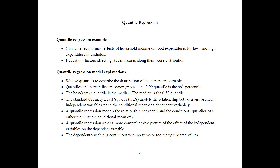In a quantile regression model, we look at the relationship between x and the conditional quantiles of y, rather than the conditional mean of y. We can estimate quantile regression at many different quantiles — whichever ones we choose, either the 25th, 50th, 75th, or the 5th and 95th percentile. This gives a more comprehensive picture of the effect of the independent variables on the dependent variable. One practical consideration is that the distribution of the dependent variable needs to be continuous and should not have zeros or too many repeated values. We want a nice continuous distribution where the values change from one observation to the next. If a third of your sample has zeros, that's not the right model to use.